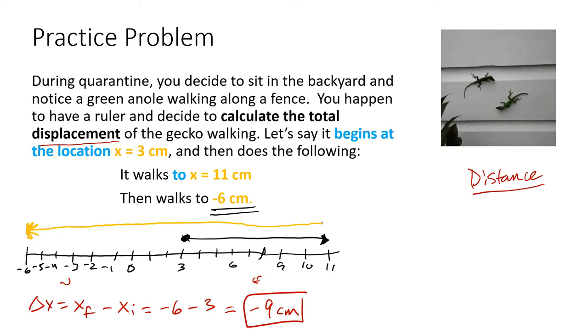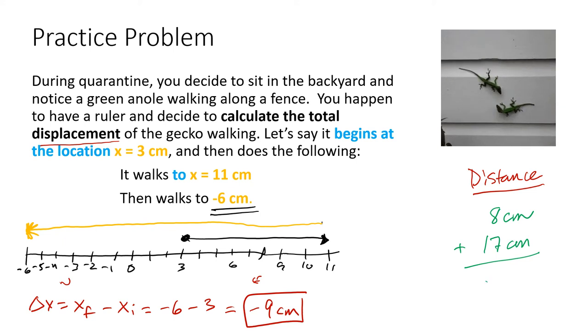How is this related to distance? Well, this anole started from 3 centimeters to 11 centimeters, that's 8 centimeters. And then it walked all the way from 11 down to negative 6. That's 1, 2, 3, 4, 5, 6, 7, 8, 9, 10, 11, 12, 13, 14, 15, 16, 17. So its total distance it covered going back and forth was 25 centimeters. That's the distance.